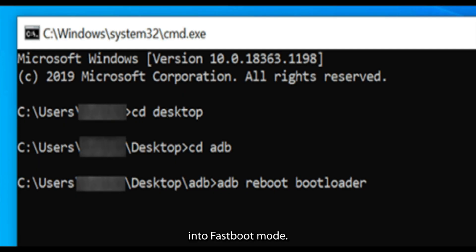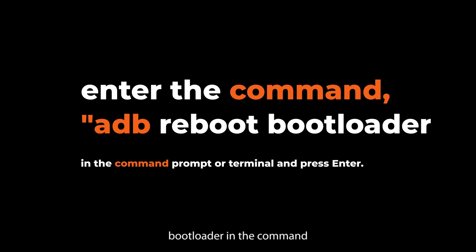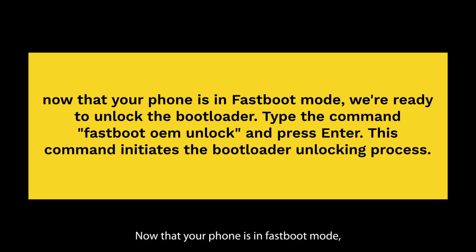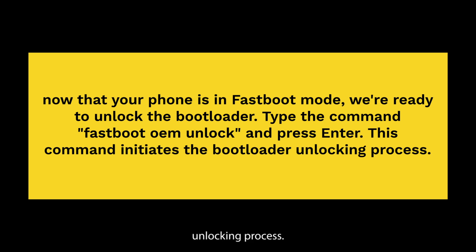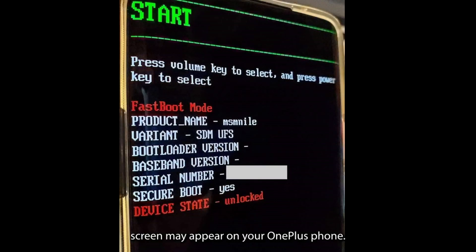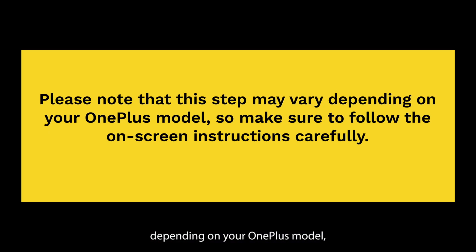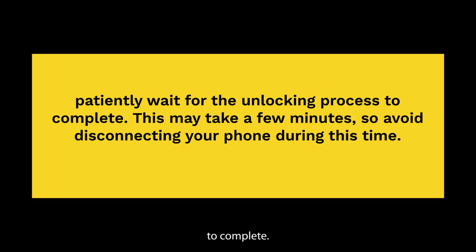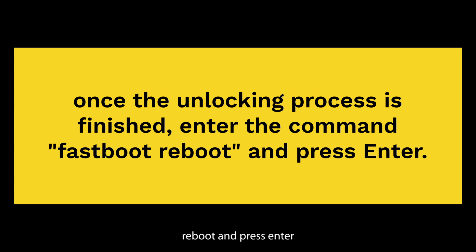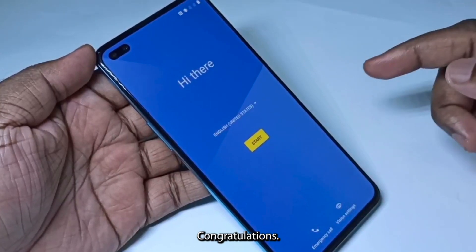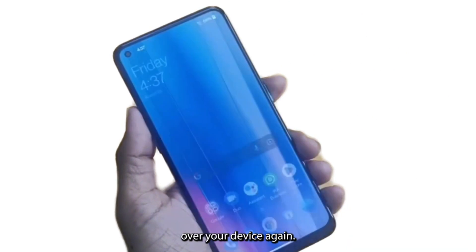Step 8: Boot your OnePlus phone into Fastboot mode by entering the command 'adb reboot bootloader' and pressing Enter. Your phone will reboot into Fastboot mode. Step 9: Type the command 'fastboot oem unlock' and press Enter to initiate the bootloader unlocking process. Step 10: A confirmation screen may appear on your phone — use the Volume keys to navigate and the Power button to select Yes or Confirm to unlock the bootloader. Note that this step may vary depending on your OnePlus model. Step 11: Wait patiently for the unlocking process to complete; avoid disconnecting your phone during this time. Step 12: Once finished, enter the command 'fastboot reboot' and press Enter. Your OnePlus phone will reboot. Congratulations — you've successfully unlocked your OnePlus phone and now have full control over your device.